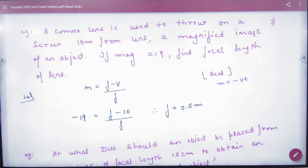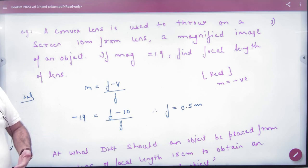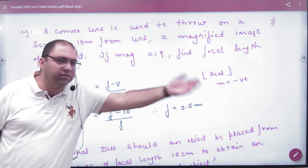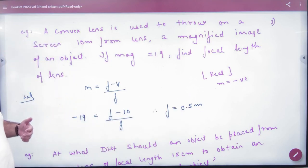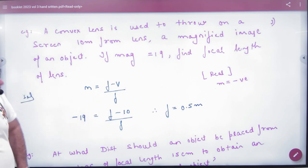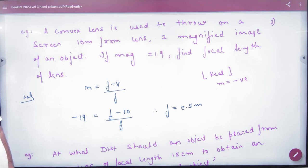Next question: a convex lens is used to throw an image on a screen 10 cm from the lens. The screen is on the other side, so V is positive, plus 10. A magnified image of an object is being made with magnification 19. Find the focal length of the lens.